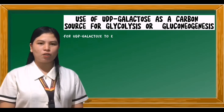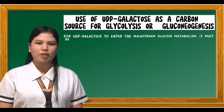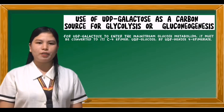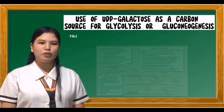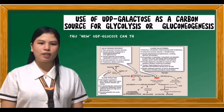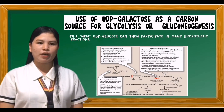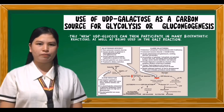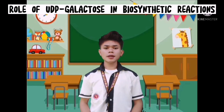For UDP-galactose to enter the mainstream of glucose metabolism, it must be converted to its C4 epimer, UDP-glucose, by UDP-hexose 4-epimerase. This new UDP-glucose can then participate in many biosynthetic reactions, as well as being used in the GALT reaction.